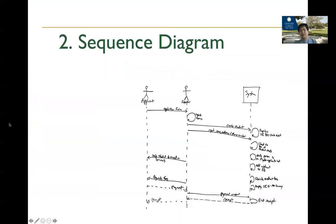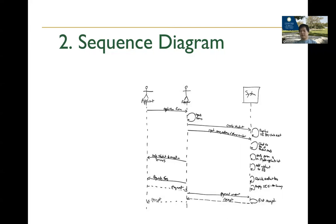A sequence diagram tries to capture a sequence of events. Unlike class diagrams, this is not structural — it's about behavior and algorithms. In a class diagram you can't really visualize algorithms, so we rely on other diagrams. The sequence diagram talks about a different kind of workflow: how your functions or code execute step by step and how different components interact with each other.